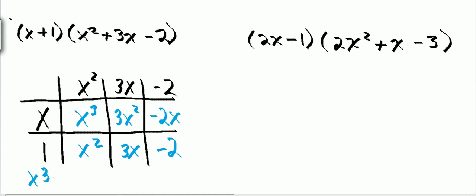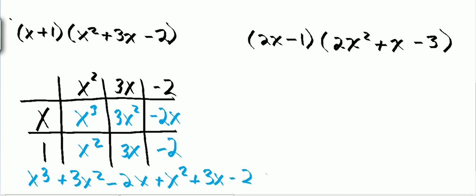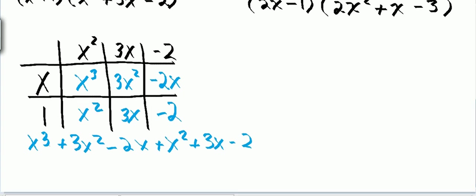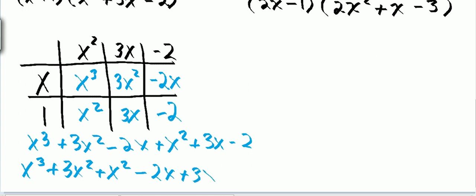Now I combine all six of these and then combine like terms: x cubed plus 3x squared minus 2x plus x squared plus 3x minus 2. Now I want to combine my like terms to simplify this polynomial. So I have x cubed, then 3x squared plus x squared, and then minus 2x plus 3x.